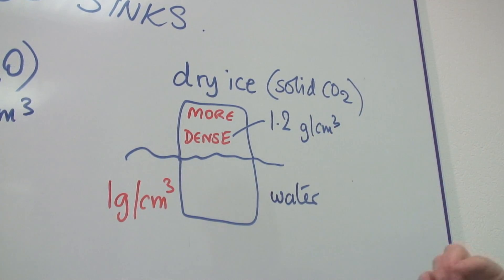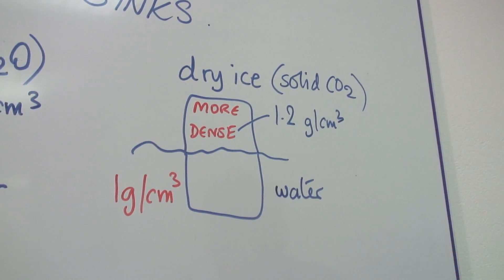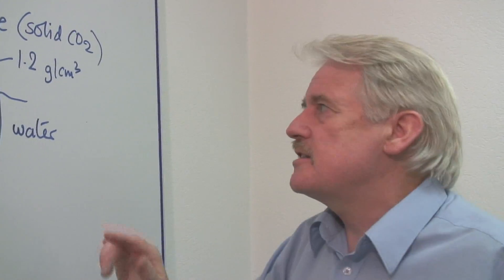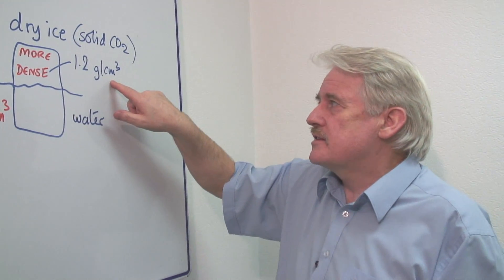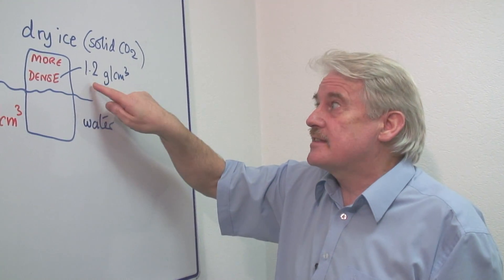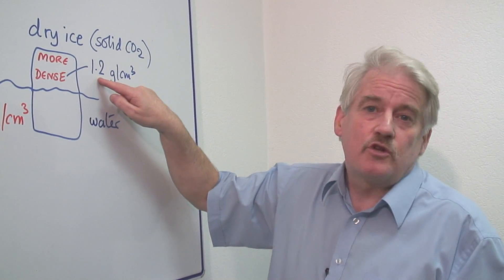dry ice for that same little cube, one centimeter by one centimeter by one centimeter, it will be 1.2 grams per centimeter cubed. That is, that same block weighs 1.2 grams.